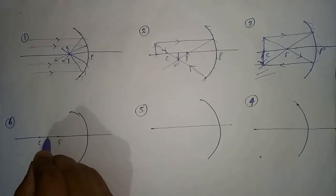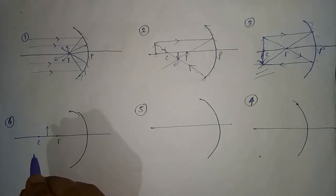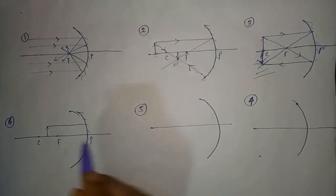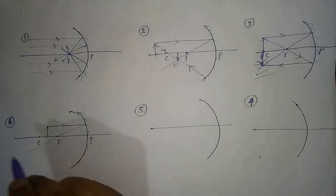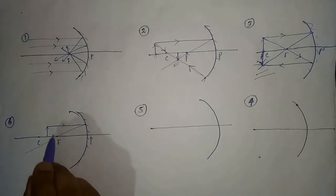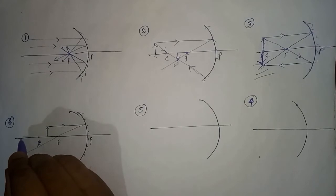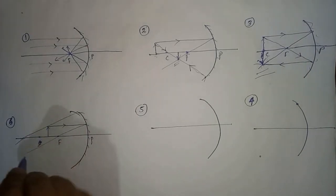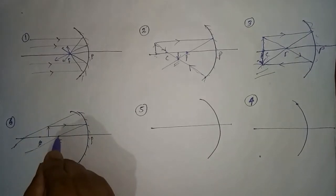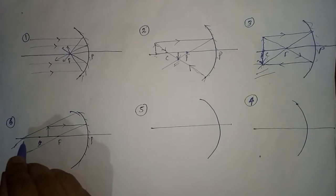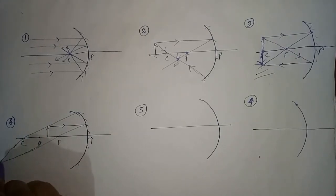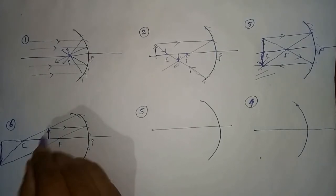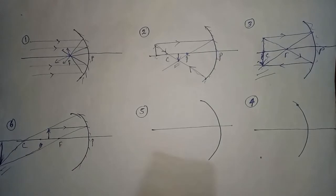Case 4: when the object lies between C and F — that is, between the center of curvature and the focus — one ray will go parallel and, after reflection, pass through the focus. The other ray from the object appears to pass through the center of curvature and, after reflection, will travel along the same path. Therefore, when the object lies between C and F, the image will form beyond C. The nature of the image will be real and inverted, and the size of the image will be enlarged compared to the object.